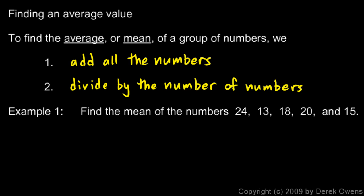In other words, once we add up all the numbers and get a total, if we added up six numbers then we divide by six. If we added up fifty numbers, then we divide by fifty. In this example, we're told find the mean of the numbers 24, 13, 18, 20, and 15.